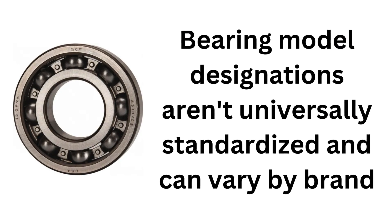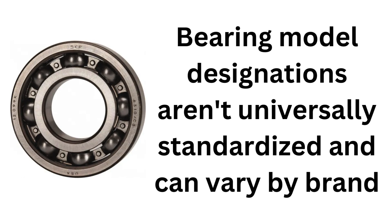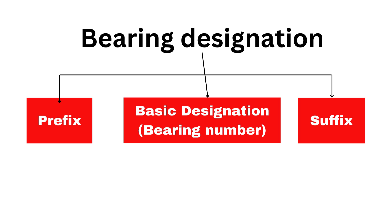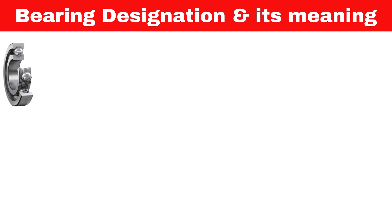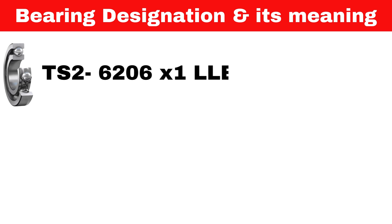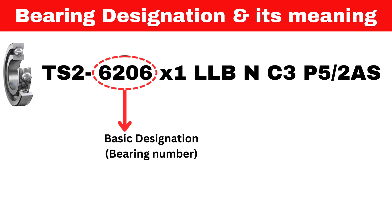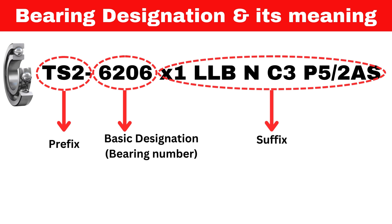The bearing number designation is not a universally standard, but in most cases all companies follow the same standard. The bearing number structure is divided into three sections: one is a prefix, the basic designation (or bearing number), and the suffix. For example, in an NTN radial ball bearing: TS2-6206-X1LLB-NC3P5-2AS. Here 6206 is the bearing number, TS2 before it is the prefix, and everything to the right of 6206 is the suffix.